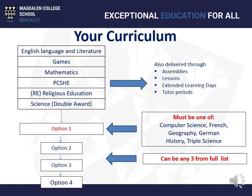So this is your curriculum. You will study English, maths and science, games — you still get games lessons — PSHE, and RE. That's what everybody studies. In addition, you have to study one of these subjects as part of our core curriculum. This is your choice, but it must be one of computer science, French, geography, German, history, or triple science.